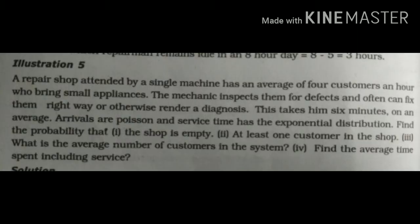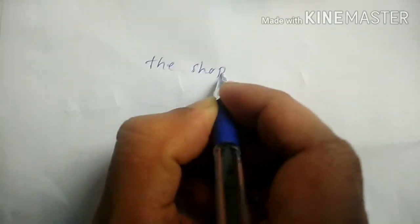Second problem: A repair shop attended by a single machine has an average of 4 customers per hour who bring appliances. The machine inspects them and can often fix them right away or render a diagnosis, taking 6 minutes on average. Arrivals follow Poisson and service times follow exponential distribution. Find: the probability the shop is empty, at least one customer in the shop, average number of customers in the system, and average time spent including service.